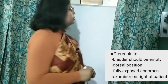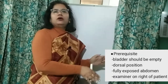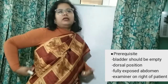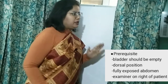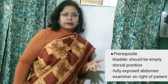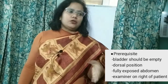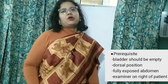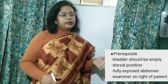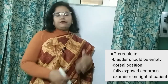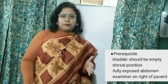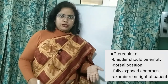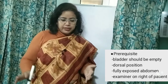Number two: dorsal position. Ask her to lie on her back in the dorsal position, with thighs slightly flexed and the abdomen fully exposed. Full exposure is important because you may miss skin conditions or a lower abdominal scar from a previous caesarean section if the abdomen is not fully exposed. So the abdomen should be fully exposed and she should lie in dorsal position.